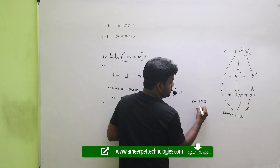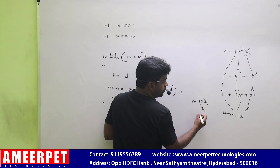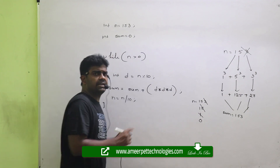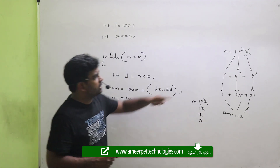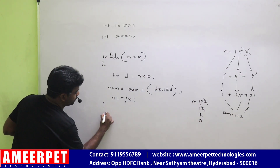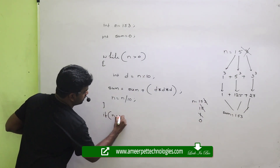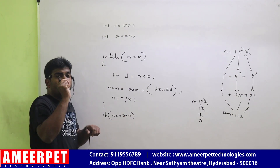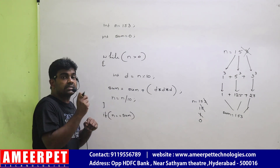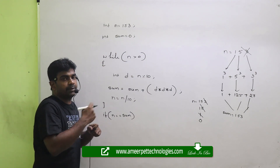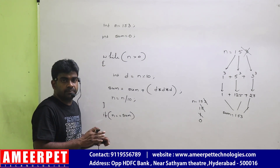One thing you need to understand. First, n value is 153. After removing the last digit, it will become 15. After removing the last digit again, it will become 1. After removing this digit, it will become 0. Finally, n value becomes 0. So how can we compare the n value and the sum value? Suppose if you write: if the given number equals this sum, it never equals, because always finally n value becomes 0. You cannot compare the n value with any other number.